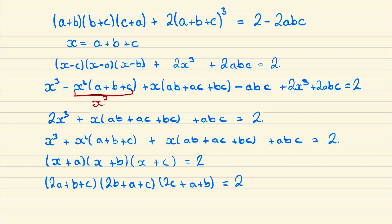And there are multiple cases to consider here. So we could have this bracket be 2, this one be 1, and this one be 1. We could have minus 2, minus 1, and minus 1.